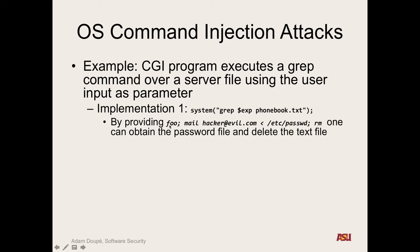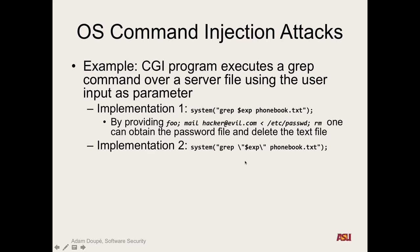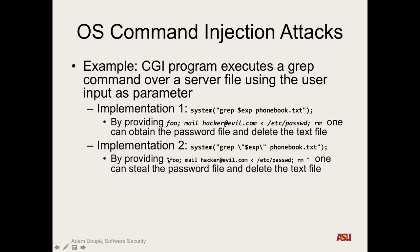Here's a super malicious payload: we pass a search term, grep whatever, then email ourselves the /etc/passwd file, and then remove phonebook.txt because we're mean hackers. What if the developer says 'I'm a better developer' and adds double quotes around the parameter? You can use a double quote to escape out of the first double quote, put whatever you want, and then close with another double quote — and now you've still stolen the password file and deleted the text file.